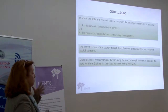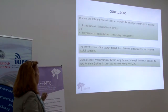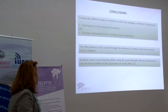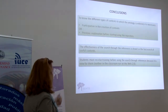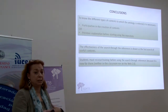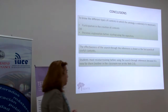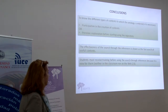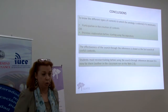The conclusion is that in order to know the different types of contents included in a repository using an ontology, it is necessary either to participate in the creation — if you are creating the contents, you know how to use them — or to have a previous explanation before starting to use the repository. The effectiveness of the search through inferences is shown by the fast retrieval of useful contents, providing students with information they do not receive either in the classroom or through Web 2.0.